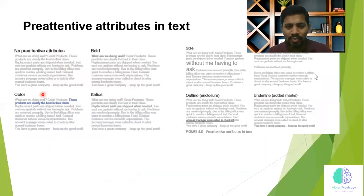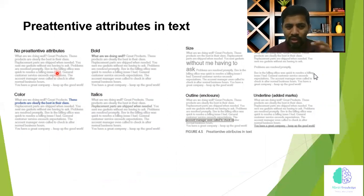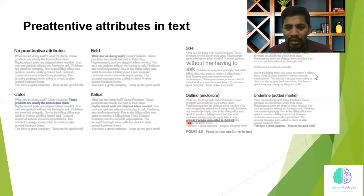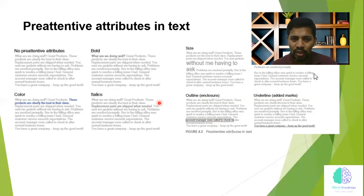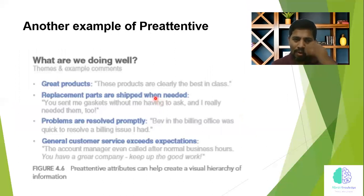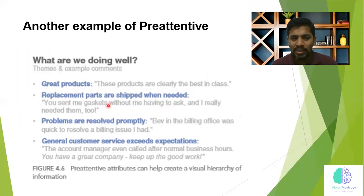Let's talk about pre-attentive attributes in text. Without any pre-attentive attributes, you force the audience to read everything before they get the message. But if you want a key line — like 'these products are clearly the best in their class' — you can make it bold, italic, larger in size, outlined, underlined, or highlighted. In all of these ways, we can use pre-attentive attribution even in text. For bullet points, you can write the main bullet followed by sub-bullets such as 'replacement parts are shipped when needed,' 'problems solved promptly,' and 'customer service exceeds expectations.'